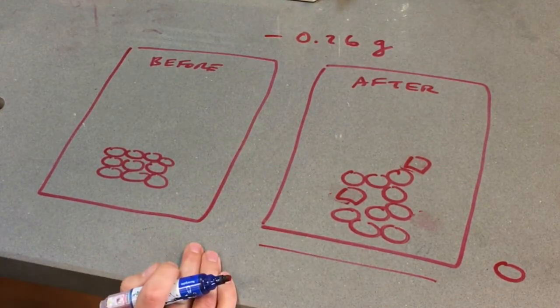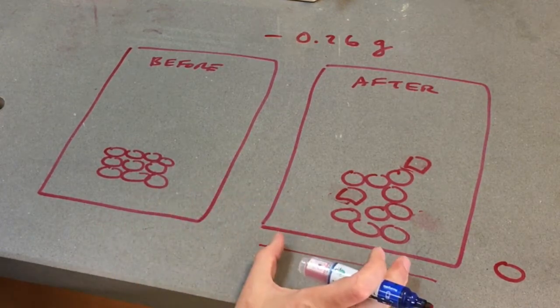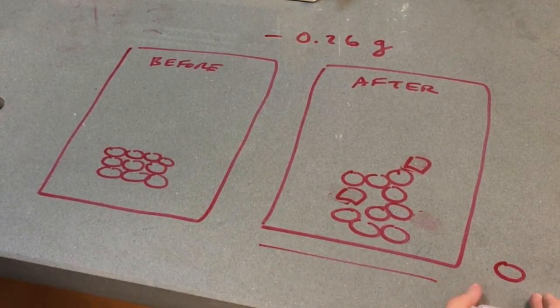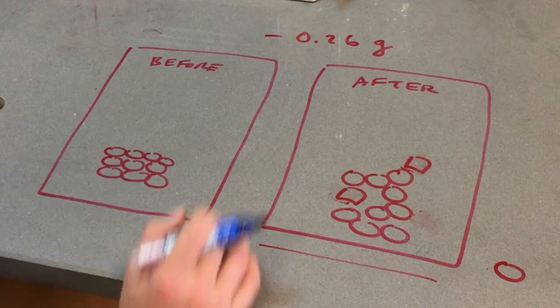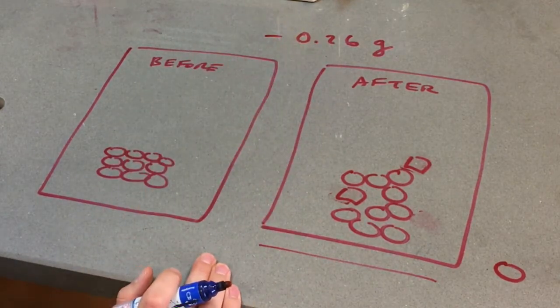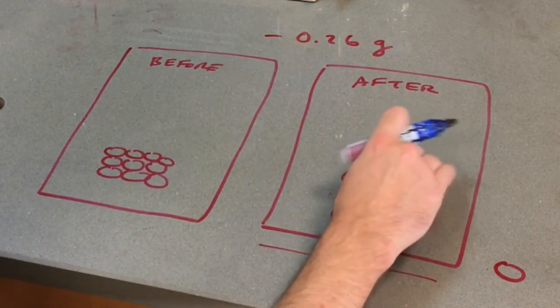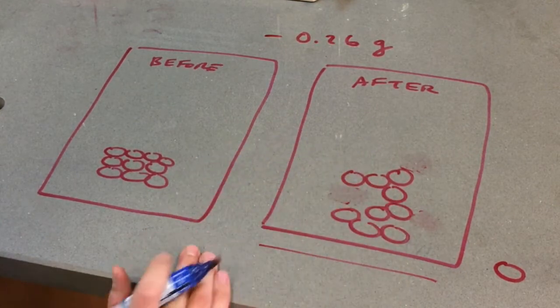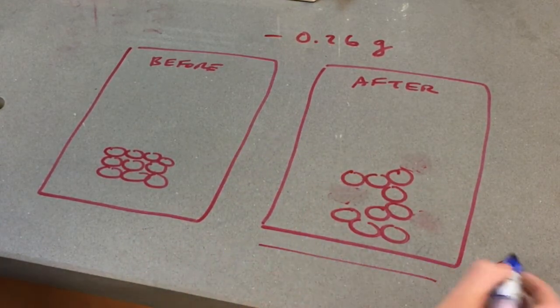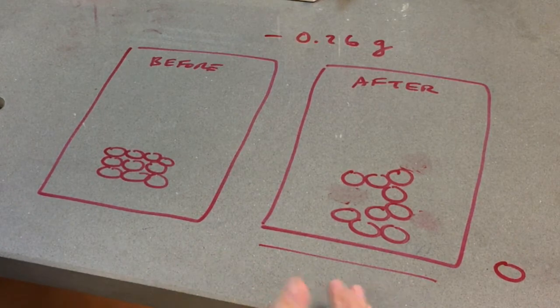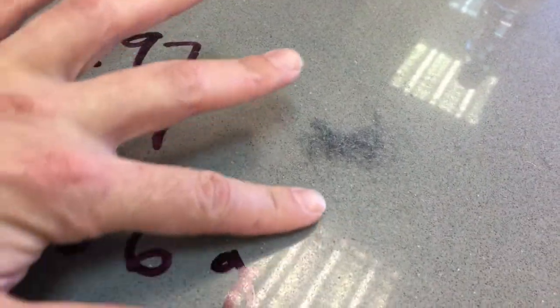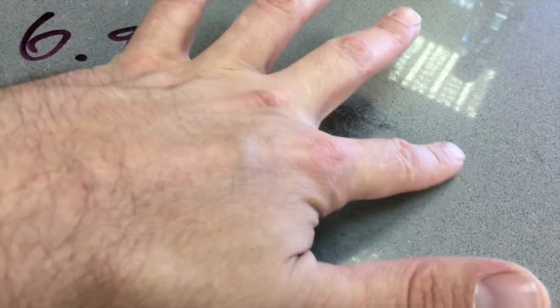So which model would you choose? Same number of particles? Maybe you lost a particle, or maybe you gained particles. Well, if we lost mass, the model that you would choose, that might be the more correct model, would be that there's some particle that came out. And indeed, that's what we saw, if you looked afterwards, there were some pieces of steel wool that had fallen to the counter.